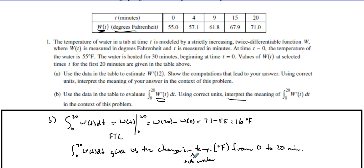In the tub, I should add that. The water temperature in degrees Fahrenheit from 0 to 20 minutes. There we go, that makes sense because that's what we found. The difference between 20 to 0, 71 to 55 is 16. So this is the change in temperature in the tub from 0 to 20 minutes.